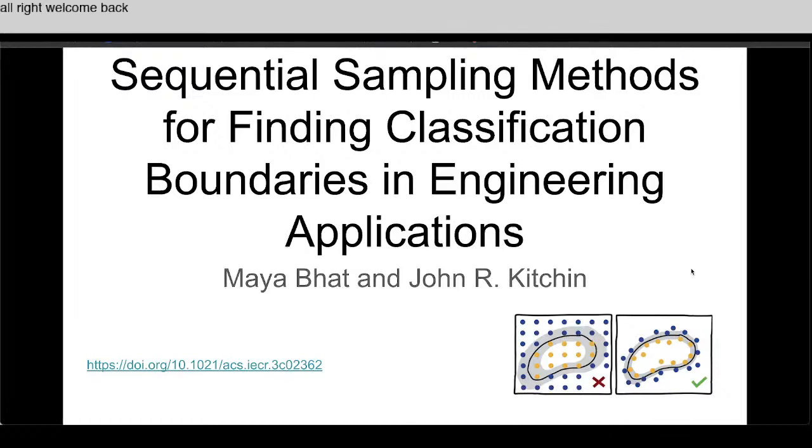Welcome back to the Kitchen Group research video channel. Today I'm going to talk about a paper that was just accepted from our group on sequential sampling methods for finding classification boundaries in engineering applications. The gist of the idea is we want to find this boundary that is in here and you could sample this whole space.